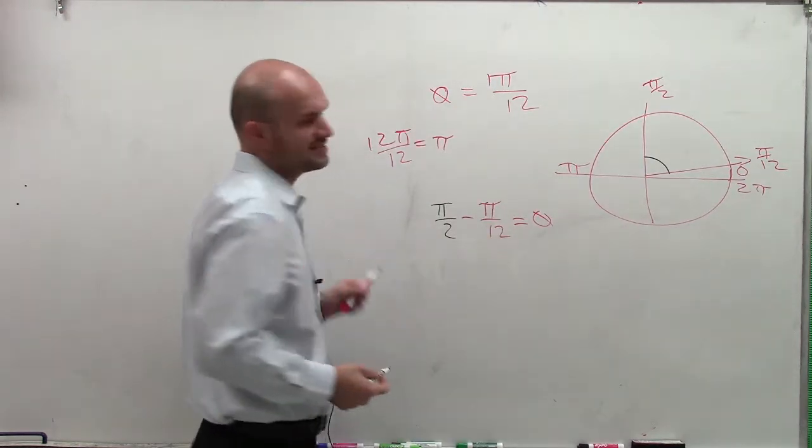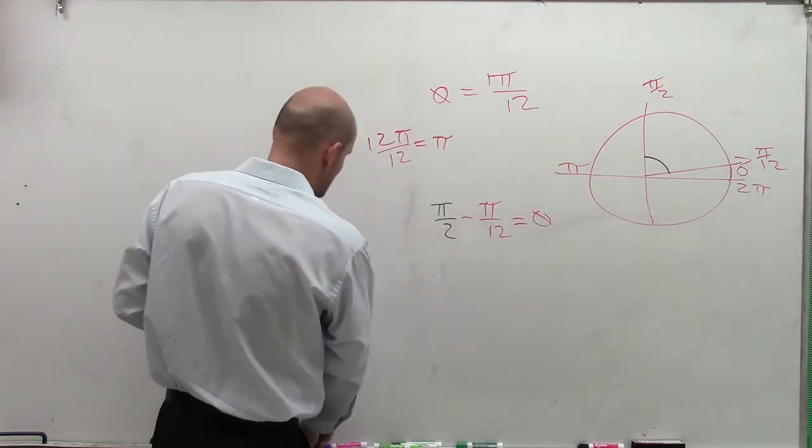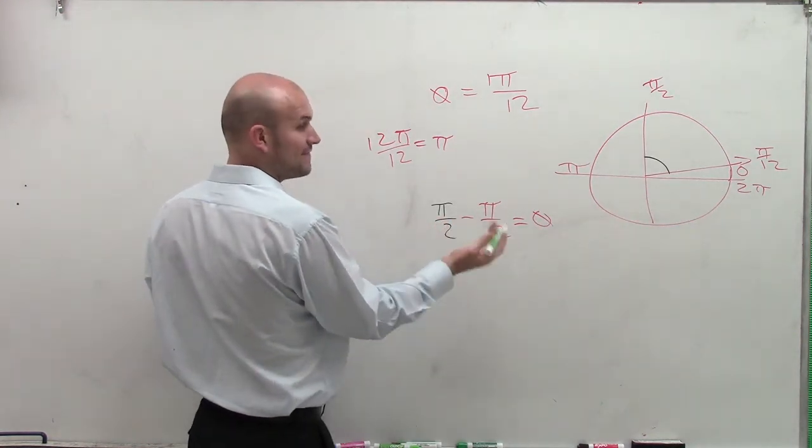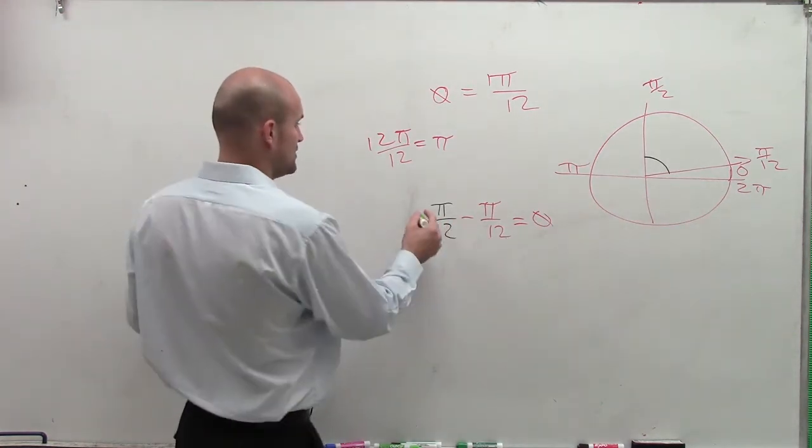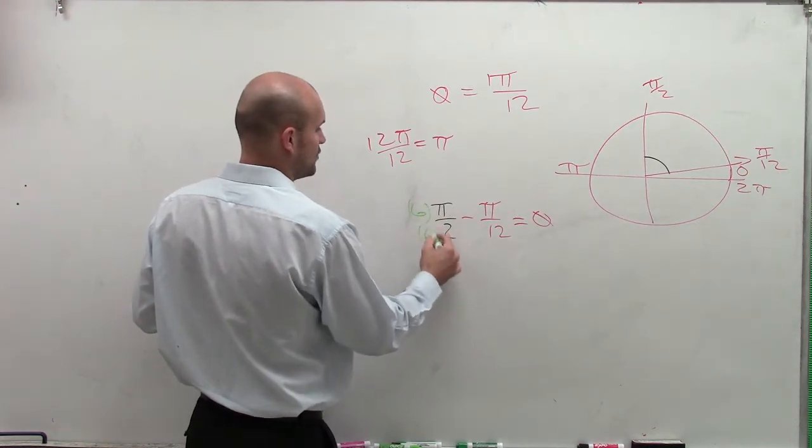So now I need to get these to be the same denominator. So to get them to be the same denominator, you've got to find the common denominator, which would be 12. So that means it's going to be multiplied by 6 over 6.